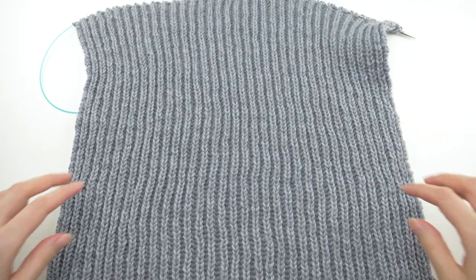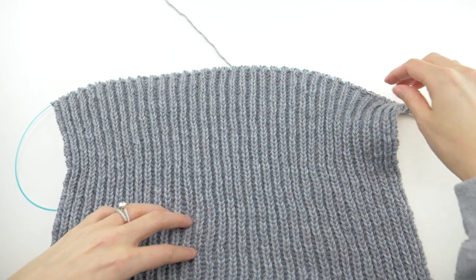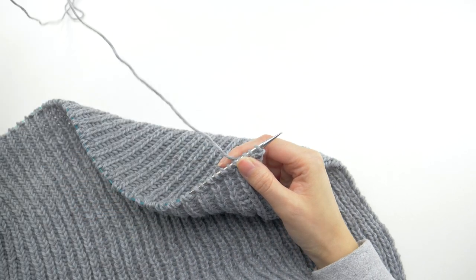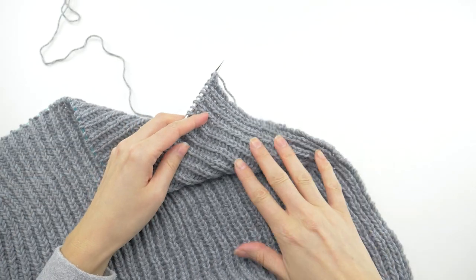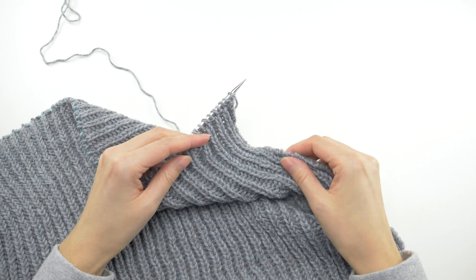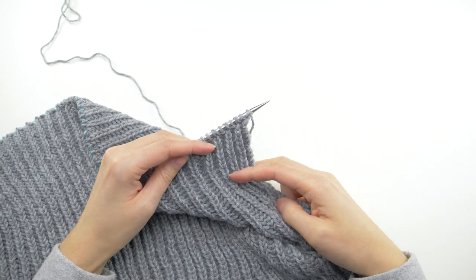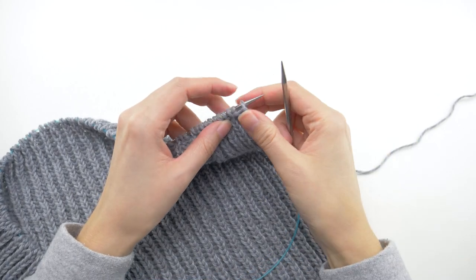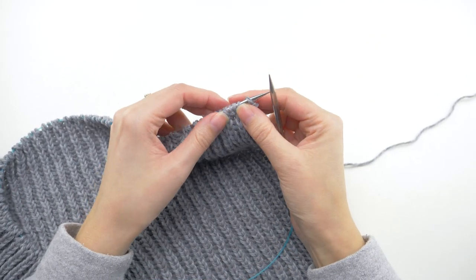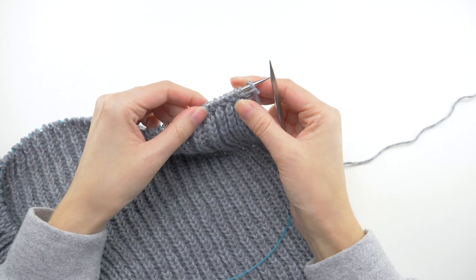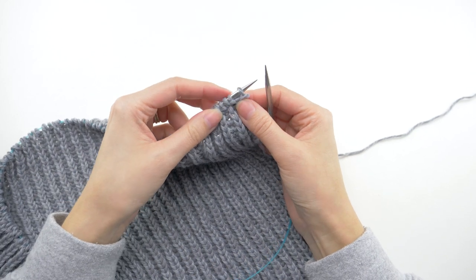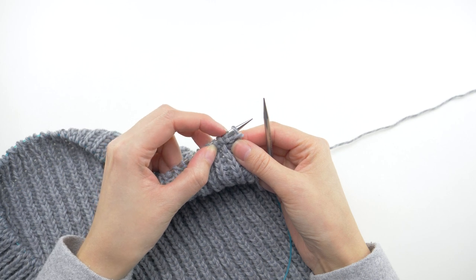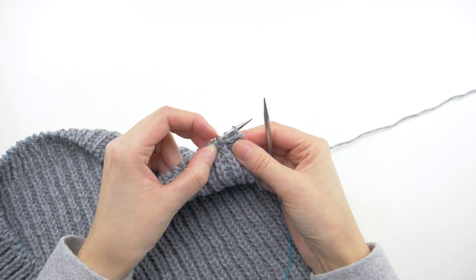So you'll continue with your repeat rows 2 and 3 until your work measures about 24 inches from the cast on edge, or until you have at least 2 yards of yarn left. Now that part is very important, and you'll see why later. When you do, you want to make sure you complete a second row, and you'll pick up your bind off on the third row. Remember the third row is where your second stitch is a slip one purlwise.